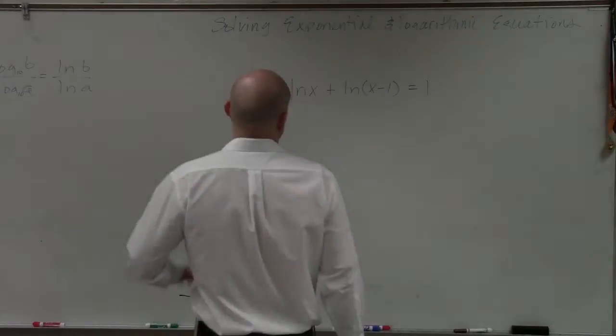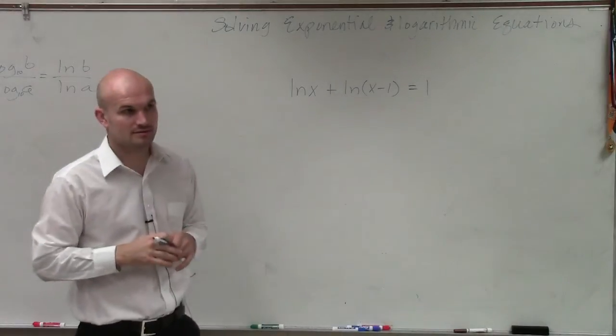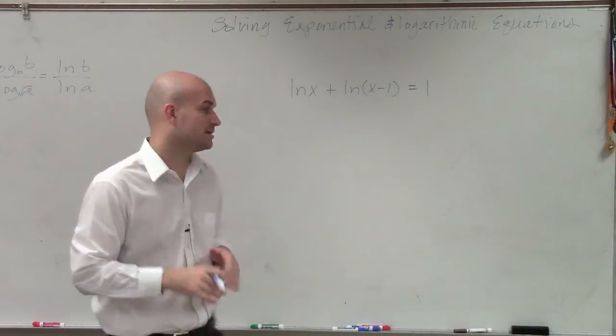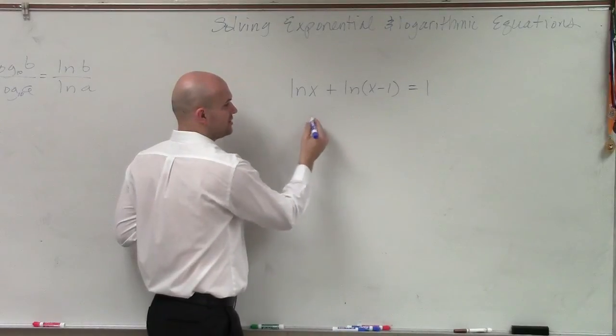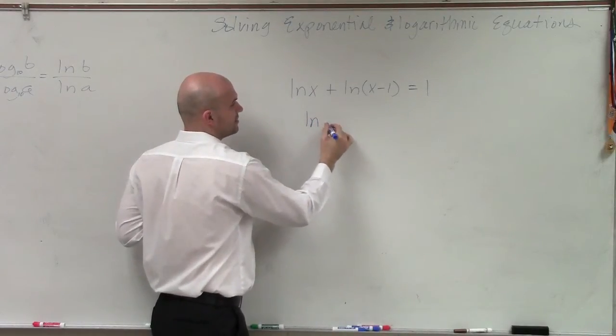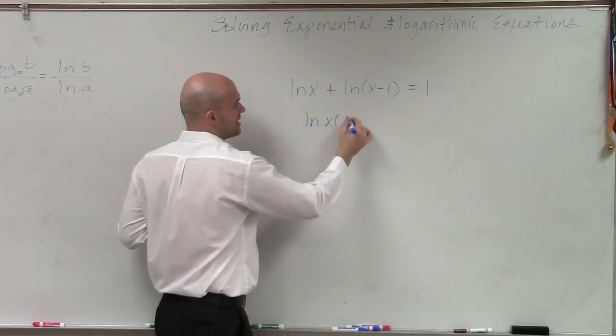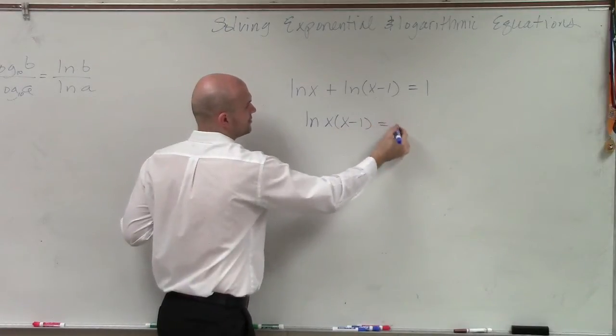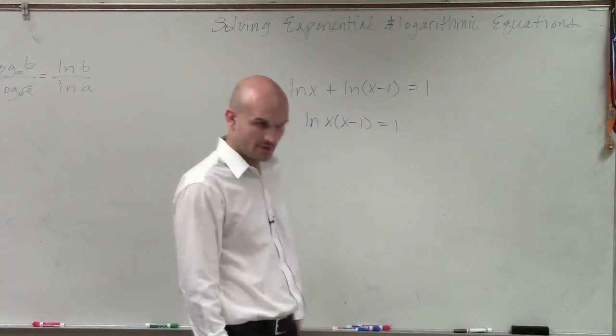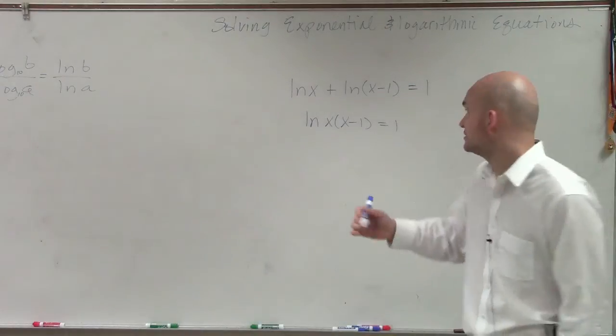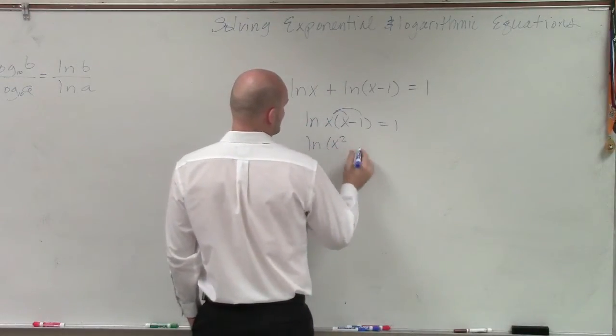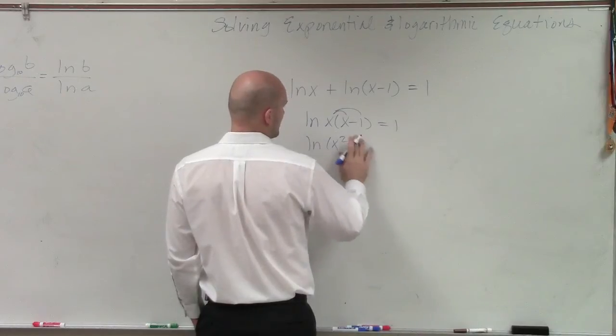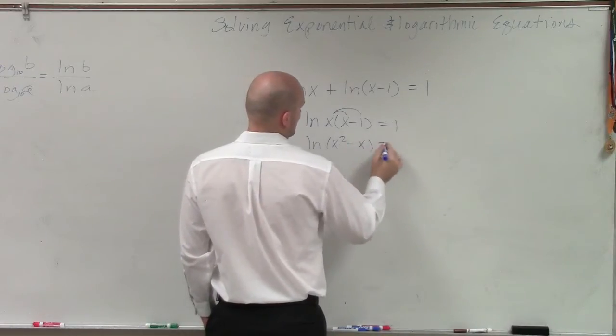So if I was going to do this problem, the first thing I could look at is multiplying these. I can use my product of logarithm. So I'd say ln of x times x minus 1 equals 1. And I could obviously distribute that. ln of x squared minus x equals 1.